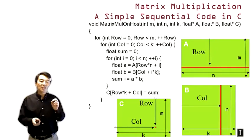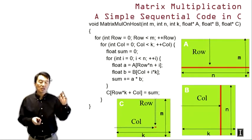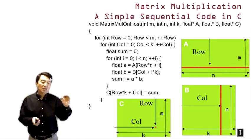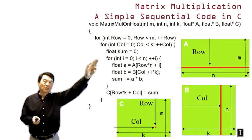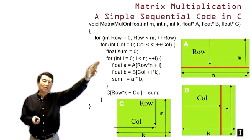Here we show a simple sequential C code for matrix multiplication. The code has two levels of loops that systematically go through all the C elements — all row positions and all column positions. For every C element visited, it generates a dot product of the corresponding A row and B column. We first initialize the C element to zero, then systematically visit all elements in the row of A and column of B.